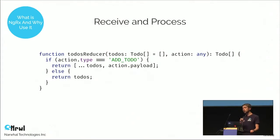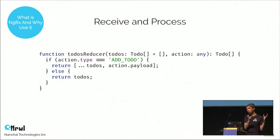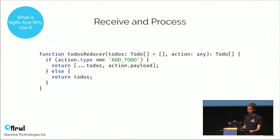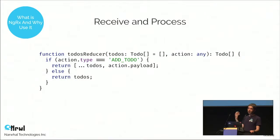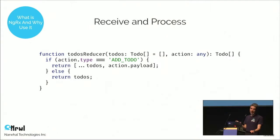The first and simplest way an action can be processed is by a reducer. A reducer is a synchronous function taking the current state of your application and some action, and creating a new state out of them. We see an example of a reducer that takes a list of to-dos and handles the add-to-do action — it creates a new list with the new to-do added and returns that list. If a different action is received, it returns the default state from the previous invocation.